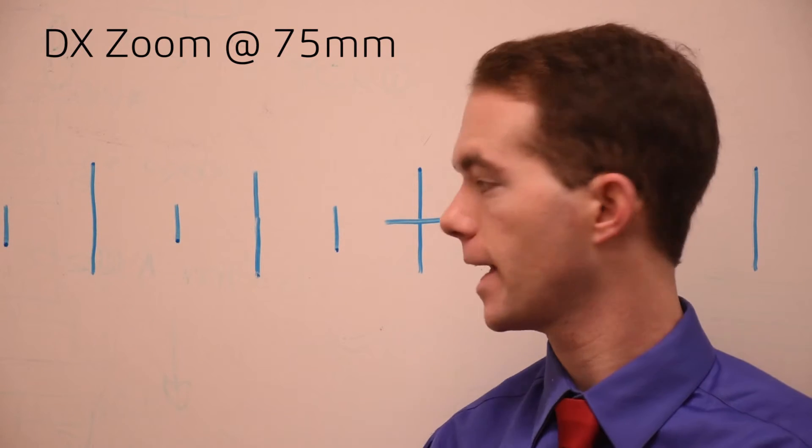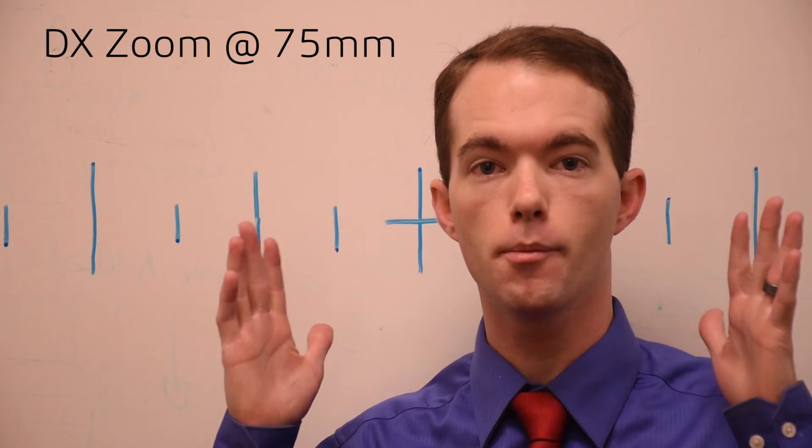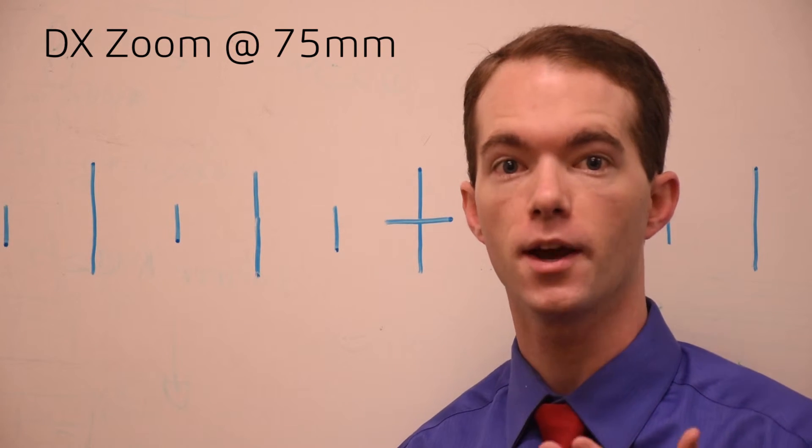And here's my DX lens set to 75mm. You can see just how much narrower this is. It's certainly different than the FX equivalent of 75.